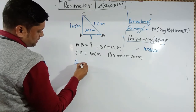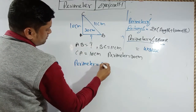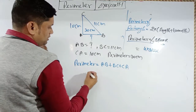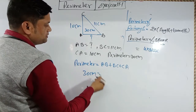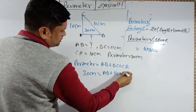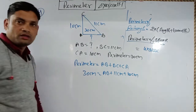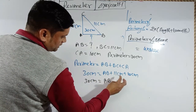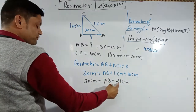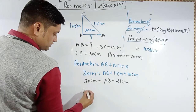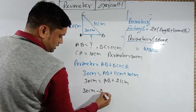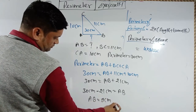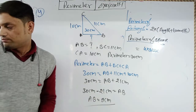Perimeter = AB + BC + CA. So 30 = AB + 11 + 10. That gives AB = 30 − 21 = 9 centimeters. That is your answer. Pause the video and write it down.